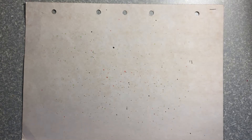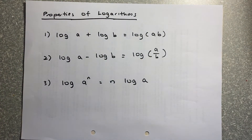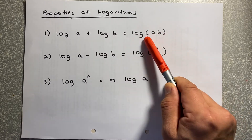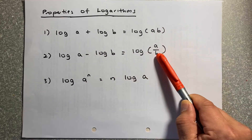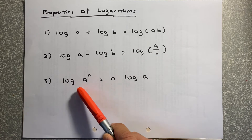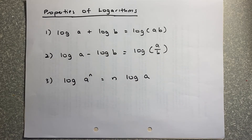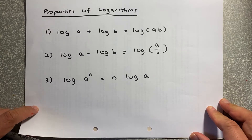Before we proceed, the second type of question is based on the properties of logarithm. There are three rules: if you have log A plus log B, you multiply to get log(A times B). If you have a minus, you divide: log(A divided by B). And if you have log A to the power of n, that n can come down and become n log A. Remember these three properties to complete the rest of the exam.